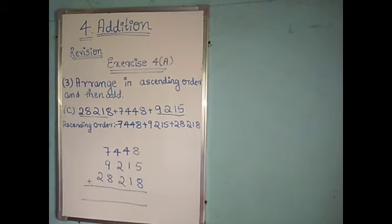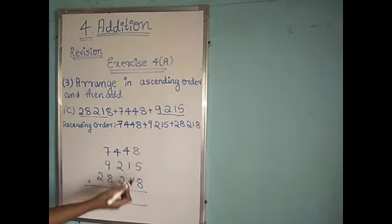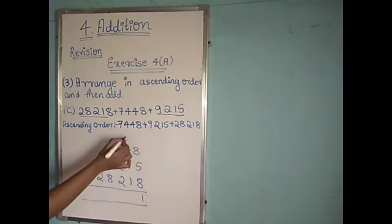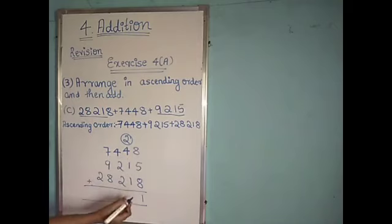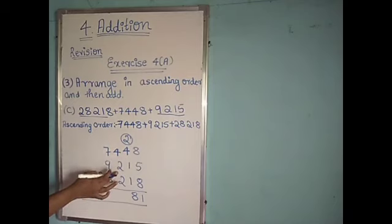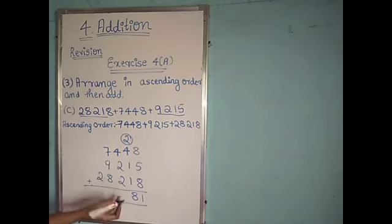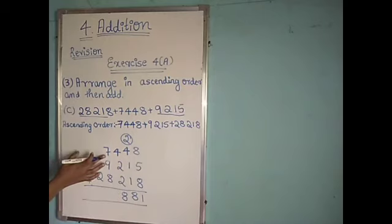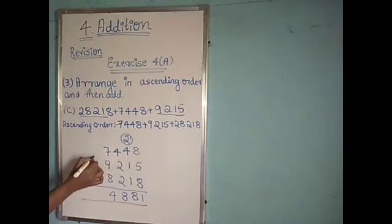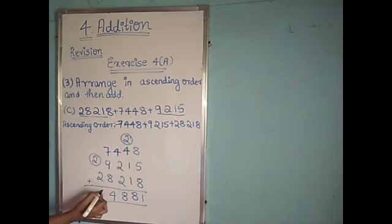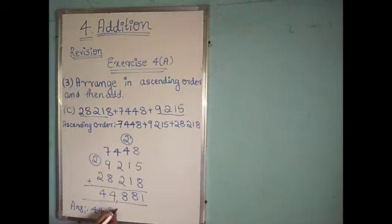Now we will start addition from the ones place. 8 plus 5 is 13, 13 plus 8 is 21 — so I write 1 and carry 2. 2 plus 4 is 6, 6 plus 1 is 7, 7 plus 1 is 8. Next, 4 plus 2 is 6, 6 plus 2 is 8 — write 8. Then 7 plus 9 is 16, 16 plus 0 is 16, write 6 wait — 16 plus 8 is 24 — write 4 and carry 2. 2 plus 2 is 4. So the answer is 44,881.